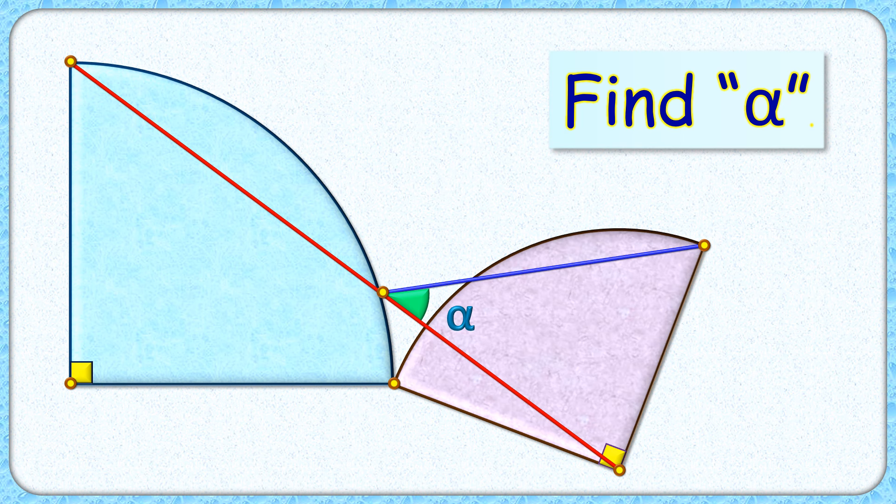Welcome everyone. This interesting question features two quadrants sharing a common vertex. These red and blue line segments are drawn as shown in the figure. The exciting part is, without any numerical data given, we have to find the value of angle alpha.